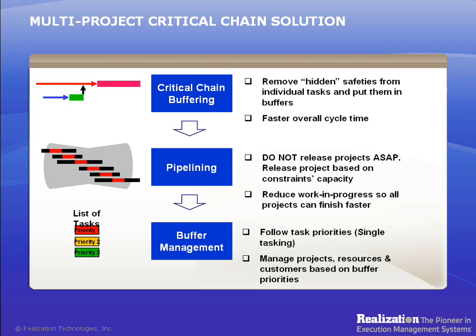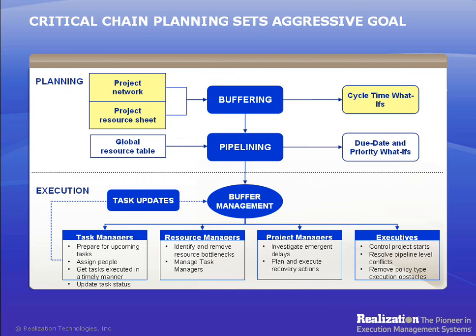This process removes local and hidden safeties from tasks across the board and puts the safety in the buffers where it belongs. Second, projects are staggered in the pipeline in order to establish release mechanisms. Having a release mechanism prevents projects from being started as soon as possible and controls the flow of work in process, or WIP, so that all projects can finish faster. Third, tasks are buffered on a daily basis. Buffer management updates the buffers and due dates based on task progress, hence the relative priorities for tasks are determined by the amount of buffer consumed. This way, a resource has a very clear priority when conflicting situations arise. In this workshop, we'll be discussing only the first part of the Critical Chain Solution: creating a Critical Chain Project Plan using the Concerto Critical Chain Client.